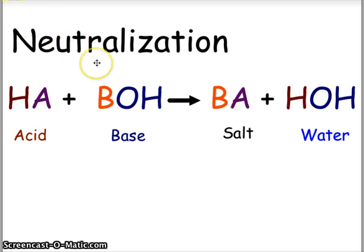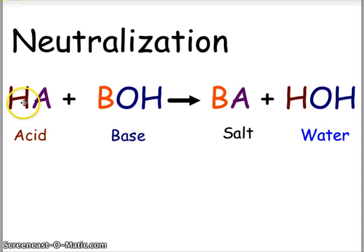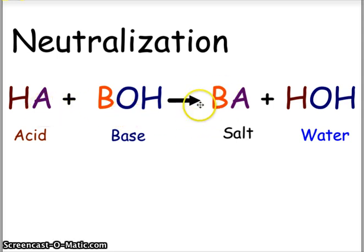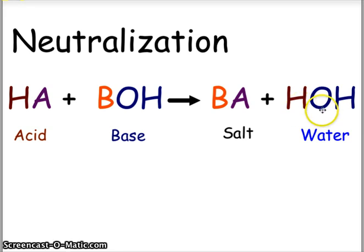We also have equations called neutralizations. In a neutralization, we have an acid — usually providing a hydrogen — and a base, providing a hydroxide. The outcome of this acid-base reaction is a salt, made by the positive ion from the base combining with the negative ion from the acid, and the H from the acid joins the OH from the base to form water, H₂O.